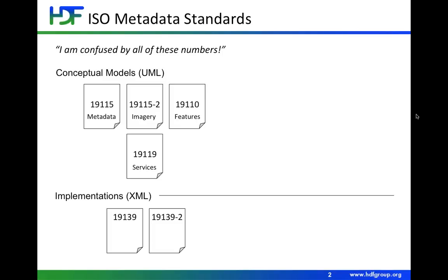The four conceptual models are: the metadata model, the model for metadata for imagery, metadata for features and feature catalogs, and services. Historically, there are two XML implementations in existence: 19139 is the implementation for 19115, and 19139-2 is the implementation for the imagery standard.